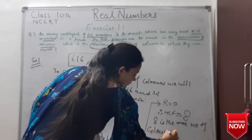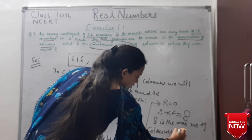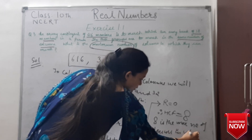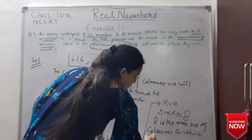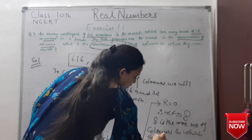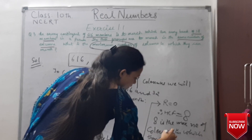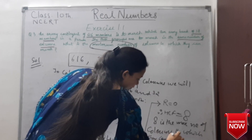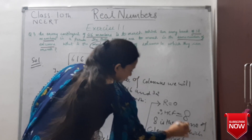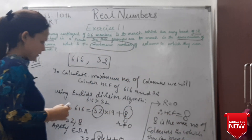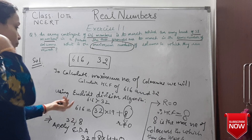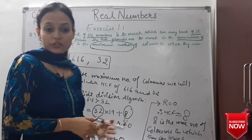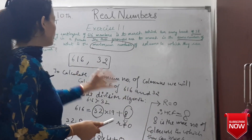So 8 is the maximum number of columns in which they can march. That is our final answer.